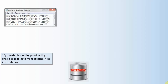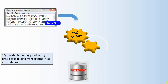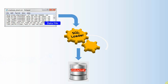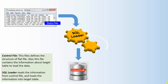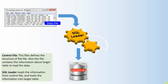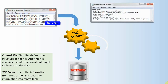This utility will read the information from the external file. Typically, we call this file a data file in SQL Loader terms. This utility reads the information from the external file and loads it into the Oracle database. To read this information, SQL Loader needs a special file called a control file, which contains information about where the source file is and metadata about it.